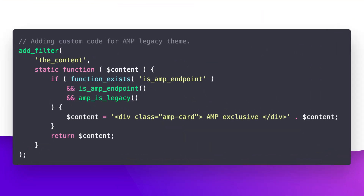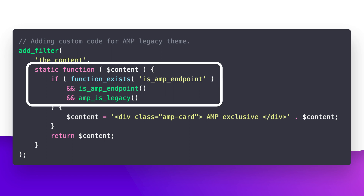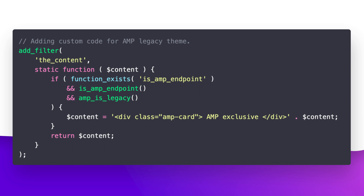Another tip is how we can add content only for AMP. We have some conditionals inside the AMP plugin to check if a request is for an AMP endpoint and also whether it's specifically for the AMP legacy theme. In this code, I'm adding a filter over the content function. When that function is called, I add an extra function that receives the content and checks if the plugin is installed by checking if the function is_amp_endpoint exists. If that statement is true, it means the AMP plugin is installed. Then I check if it is the AMP legacy theme. If I don't want to restrict it to legacy only, I can remove that check and apply it to any AMP version.